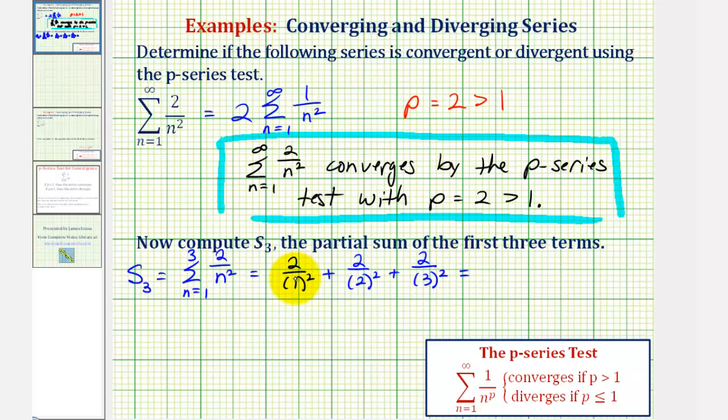So notice how this would give us, this would be two, plus two fourths or one half, and then plus two ninths. Let's go ahead and add these by obtaining a common denominator. So let's write two as two over one. Notice the common denominator is eighteen, so multiply the first fraction by eighteen over eighteen, second fraction by nine over nine, and the third fraction by two over two. Notice how we have our common denominator of eighteen, and the numerator would be thirty-six plus nine plus four. And therefore the partial sum would be forty-nine eighteenths.